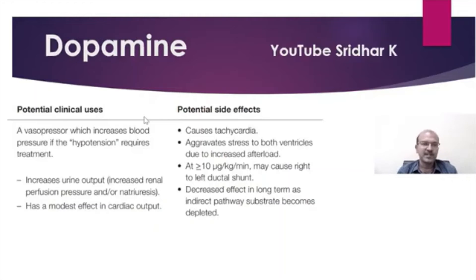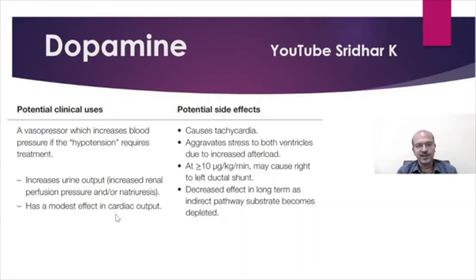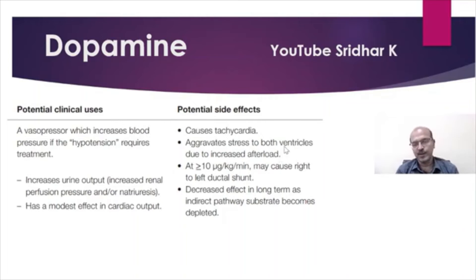One more important factor about dopamine is its potential clinical uses. It is a vasopressor which increases blood pressure if the blood pressure itself requires treatment. It may help to increase urine output and has a modest effect on cardiac output. It has a chronotropic effect as well — tachycardia can be a side effect, and it aggravates stress to both ventricles because of the chronotropic effect as well as the increased afterload.